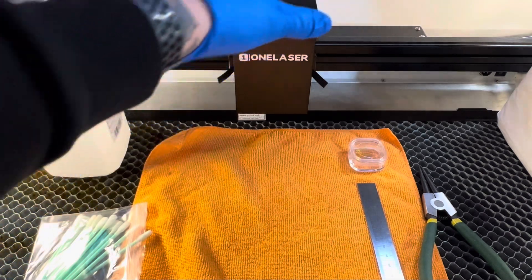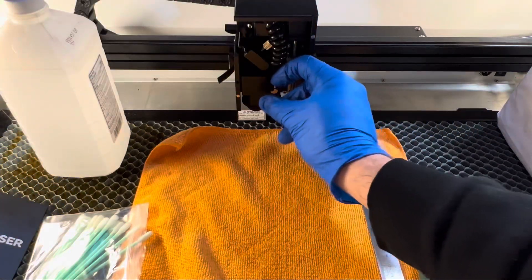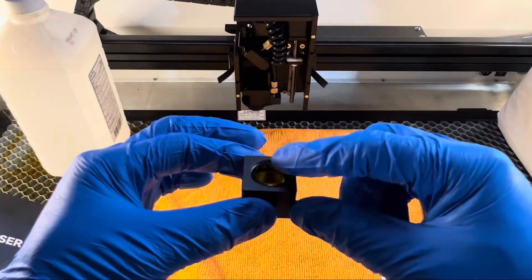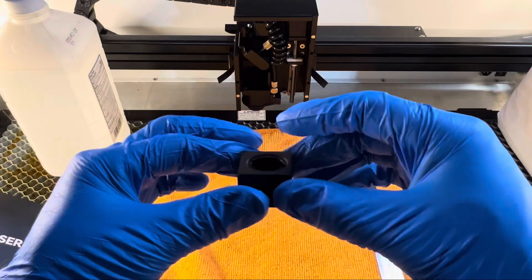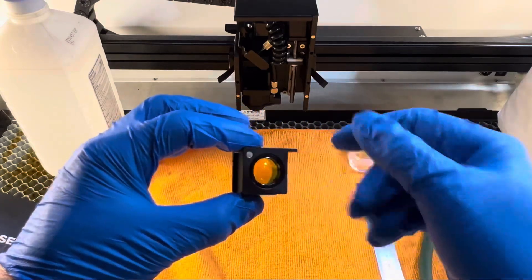Jumping right into it, we're going to remove the cover and the magnetic block. If you have the XRF, your lens is mounted on the top. If you have the XT, like I have, your lens is mounted on the bottom.